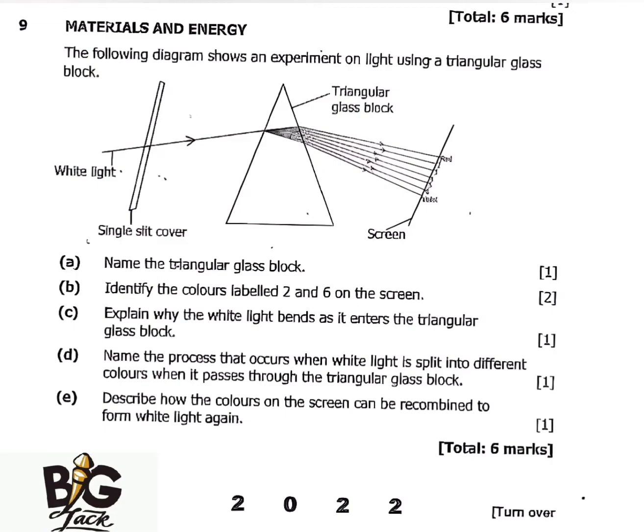As you can see, once the white light enters the triangular glass block, the light splits up into seven colors. The first one is red and the last one is violet. On the screen here, it is showing seven colors — just like the way the rainbow is made up of seven colors.